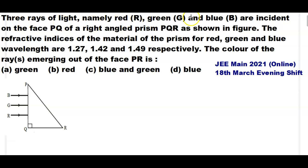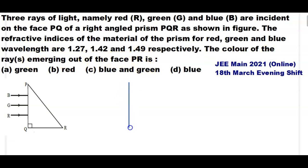Three rays of light, namely red, green and blue, are incident on the face PQ of the right angle prism PQR as shown in the figure. The refractive indices of the material of the prism for red, green and blue wavelengths are 1.27, 1.42 and 1.49 respectively. The question asks for the color of the rays emerging out of the face PR.